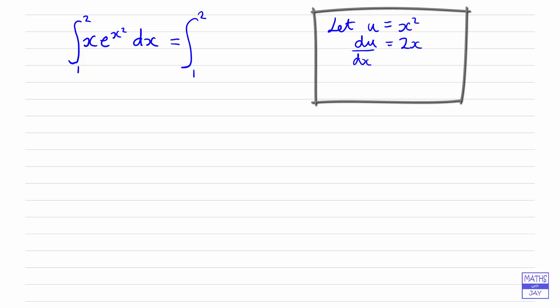It doesn't matter whether we write x times e to the x squared or put the e to the x squared first and have e to the x squared times x, but then it's clearer what we've got going on here.